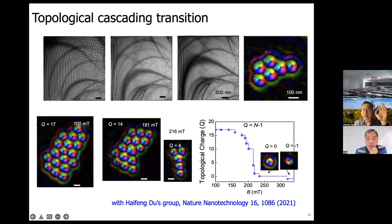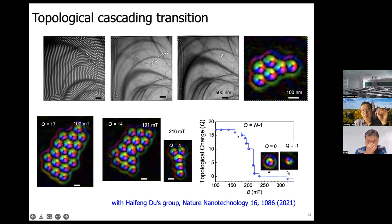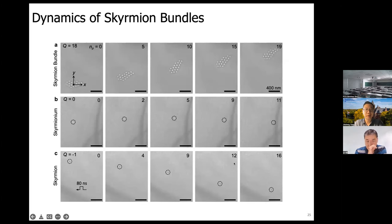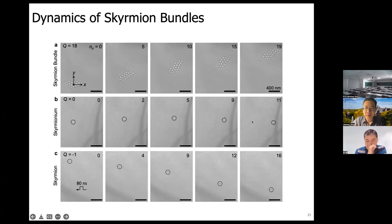This is the experimental observation using Lorentz TEM — a beautiful magnetic image showing the skyrmion bundle. The number of skyrmions in the bundle is random, but importantly: if you further increase the magnetic field, no matter what number of skyrmions you start with, the bundle undergoes cascading transitions and the skyrmions are annihilated one by one. Eventually you end up with the skyrmionium state, and further increasing the field collapses it to a conventional skyrmion. Interestingly, due to vanishing topological charge, the skyrmionium moves straight along the current with no transverse velocity.